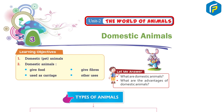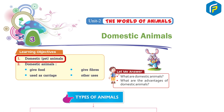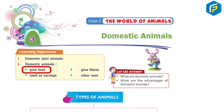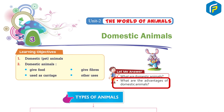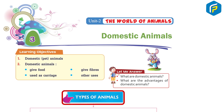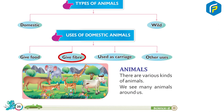Unit 2: The World of Animals. Chapter 3: Domestic Animals. Learning objectives: domestic pet animals, domestic animals that give food, give fibers, are used as carriage, and other uses. We will answer: what are domestic animals, what are the advantages of domestic animals, types of animals, and uses of domestic animals.